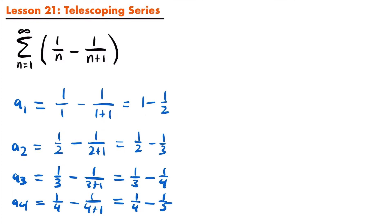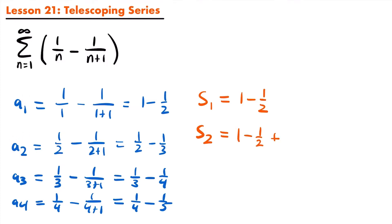Now let's take a look at the first four partial sums. S sub 1 is equal to a sub 1, so that's just 1 minus 1 half. S sub 2 equals a sub 1 plus a sub 2, so we have 1 minus 1 half plus 1 half minus 1 third. Notice that negative 1 half and positive 1 half cancel out, so s sub 2 equals 1 minus 1 third.